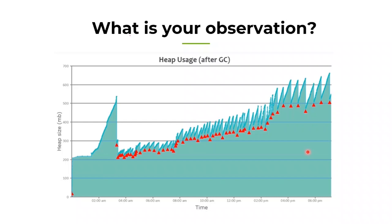Now look at this GC graph from a different JVM instance. This application started at 200 MB. After that, you can see full GC running — the red triangles — but the memory is not dropping back to that 200 MB starting mark; it slowly keeps climbing. There are two possibilities: either heavy incoming traffic creating lots of active objects, or this application has an acute memory leak accumulating over time.